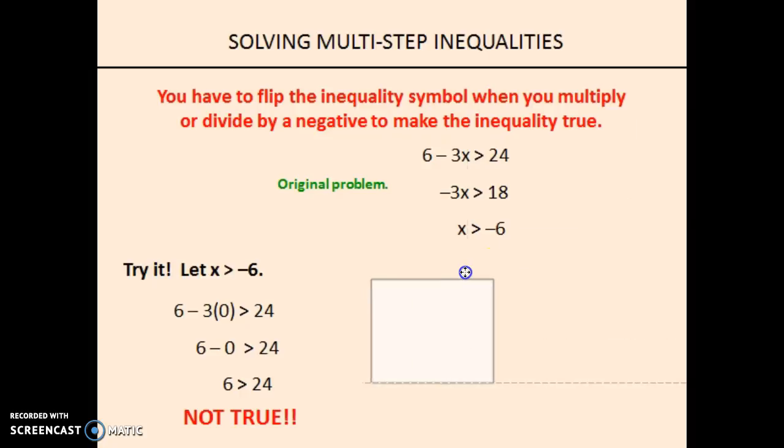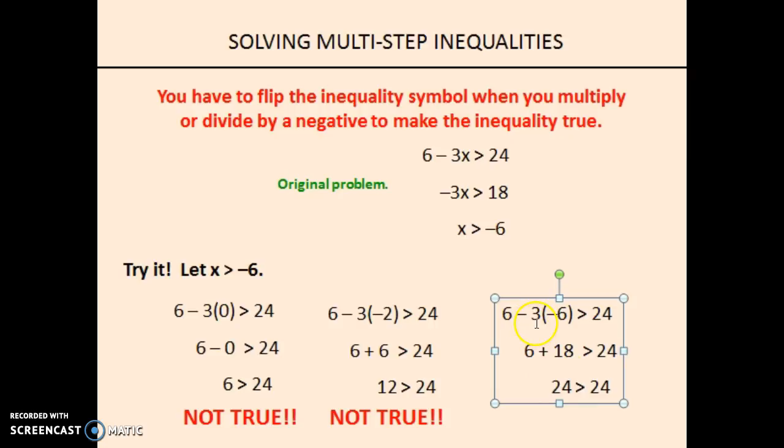Let's pick another one. How about negative 2? We end up with 6 plus 6, because negative 3 times negative 2 is positive 6, and we end up with 12 is greater than 24. Again, that one is not correct. What if we try negative 6? We have negative 3 times negative 6, which is positive 18. 6 plus 18 is 24. Is 24 greater than 24? Again, it's not true. None of the numbers that are greater than negative 6, or are negative 6, are going to work. That means it has to be a number that's less than negative 6. So, any time we have to divide or multiply by a negative number, we have to switch the inequality to go in the other direction.